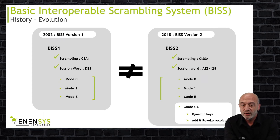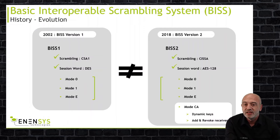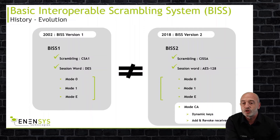Most of you know very well the BIS, especially people working in the SNG contribution, as it is commonly used in this domain. It is a standard method to protect your content. This method has been standardized in 2002 with three modes: Mode 0, which means no scrambling; Mode 1, where the content is scrambled with a CSA algorithm with a fixed and clear key.